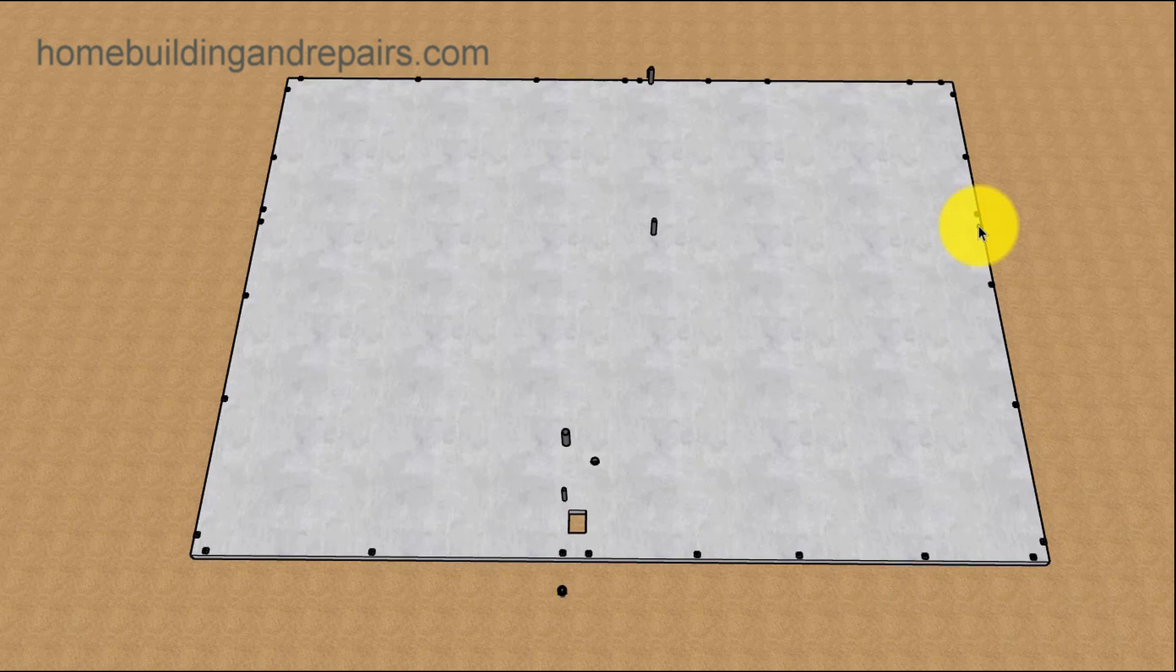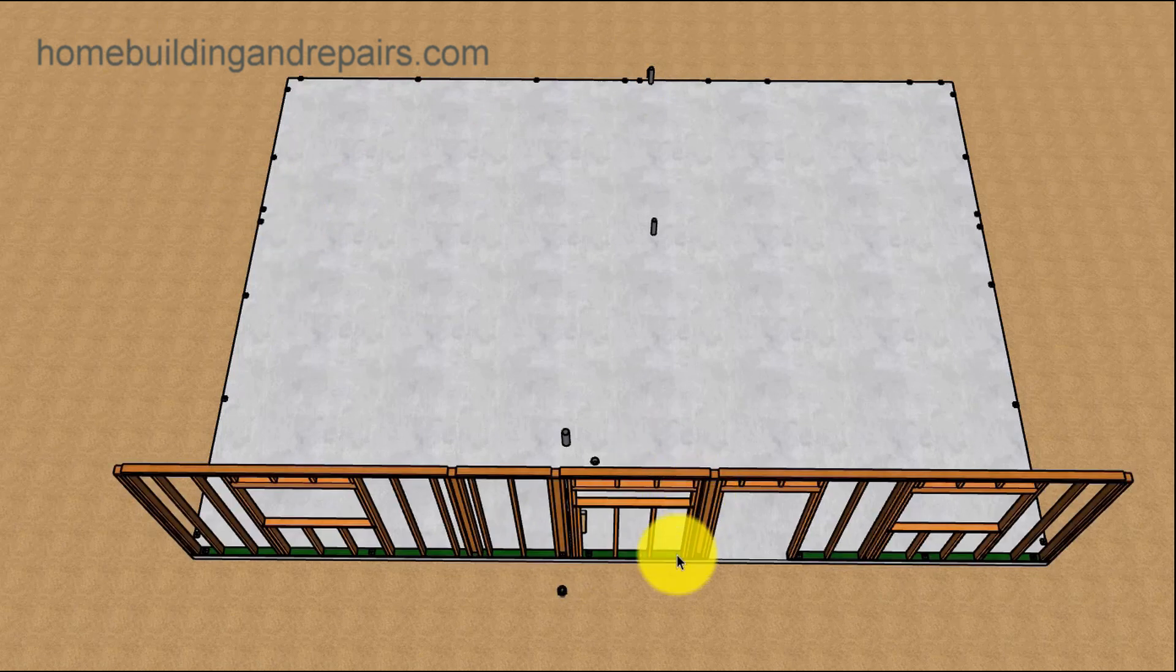You can eliminate one of the anchor bolts by moving this anchor bolt over here for the wall framing. So don't think you need to stick with my design here. There are ways that you can save a few dollars if you get a little creative.